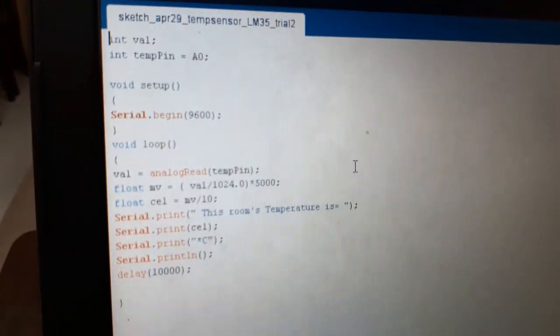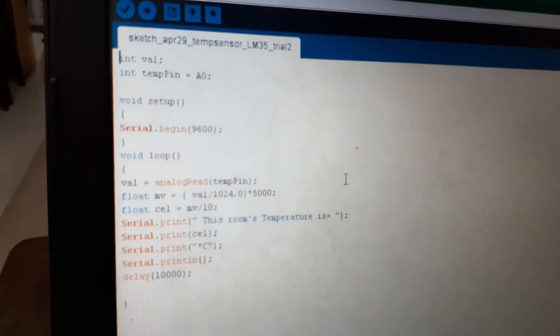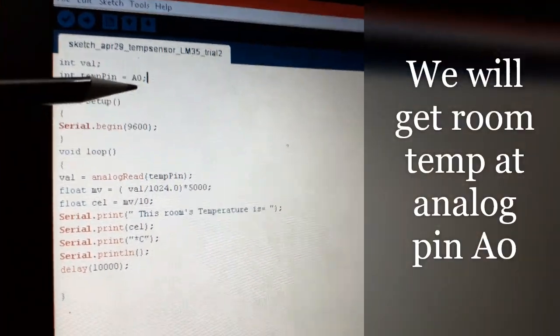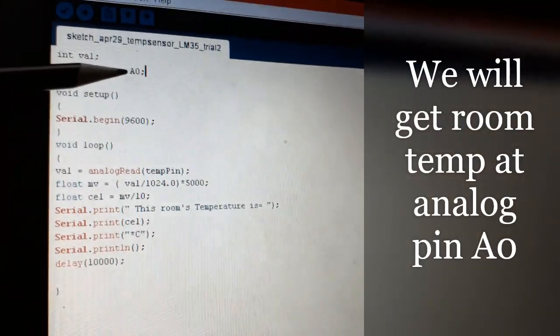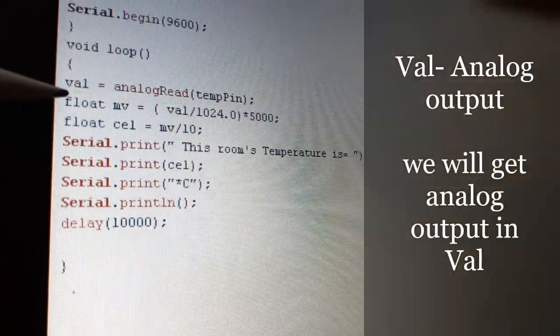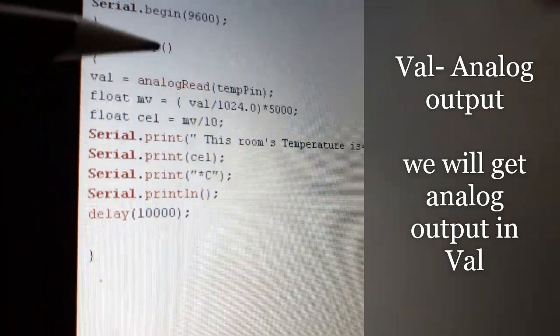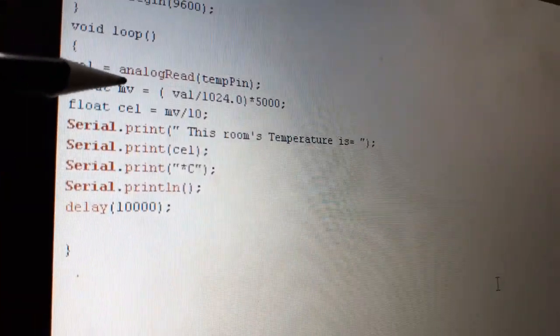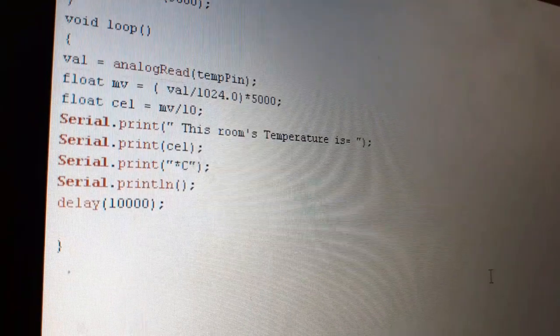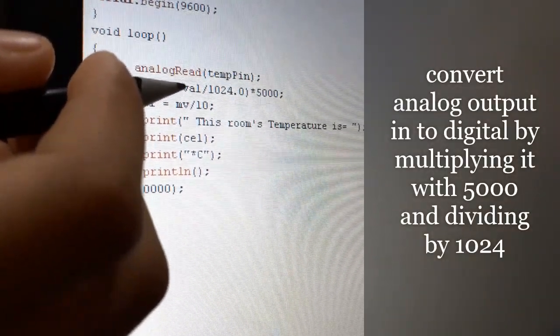You can see this program. Now, I am going to explain this program. On analog pin A0, we are going to get output voltage. Here, in variable val, we are going to get the output in millivolts using the inbuilt function analogRead.